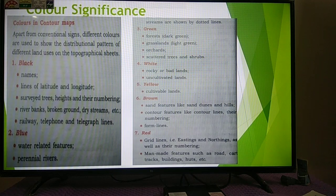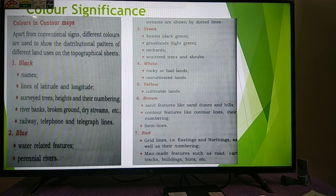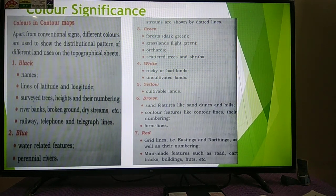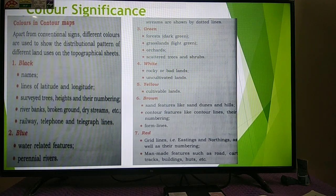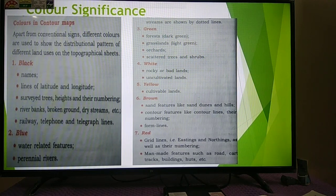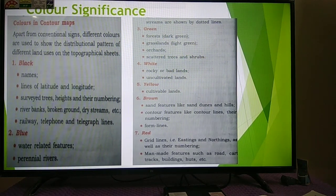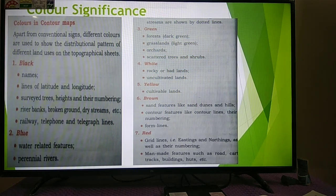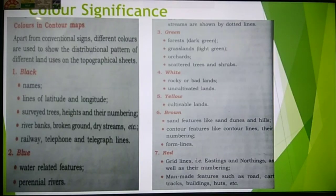The next topic is color significance. Apart from conventional signs, different colors are used to show the distributional pattern of different land uses on the topographical sheet. Total seven colors are used on the topo sheet. First is black — all names, riverbank, broken ground, dry stream, survey, tree heights and their numbering, railway track, telephone and telegraph lines are shown with black color.